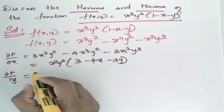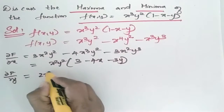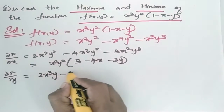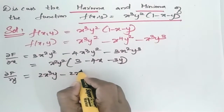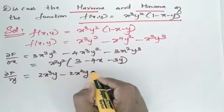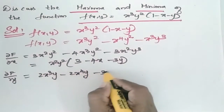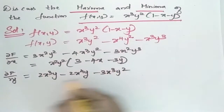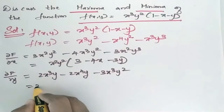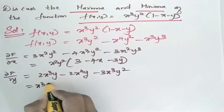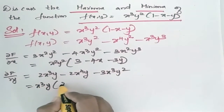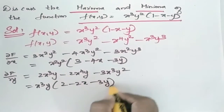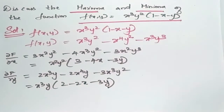Similarly, ∂f/∂y = 2x³y - 2x⁴y - 3x³y². Taking x³y common, this gives x³y(2 - 2x - 3y).